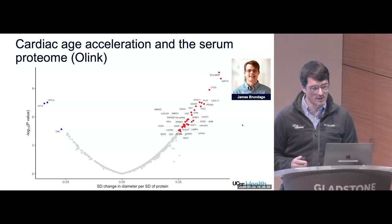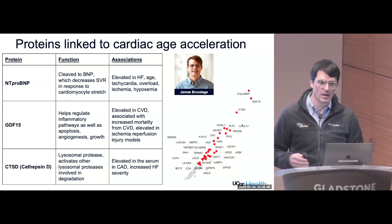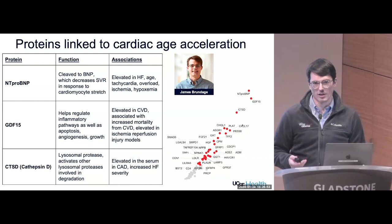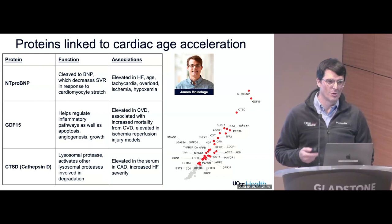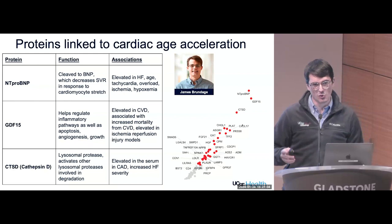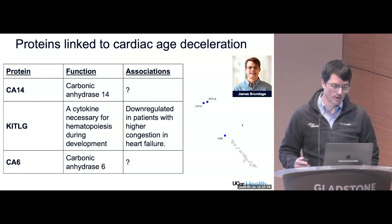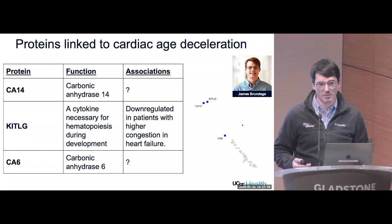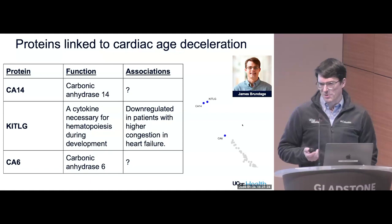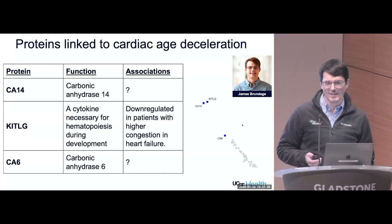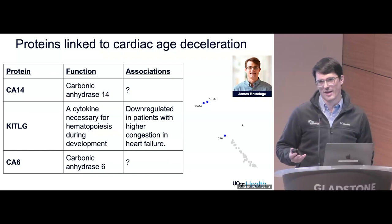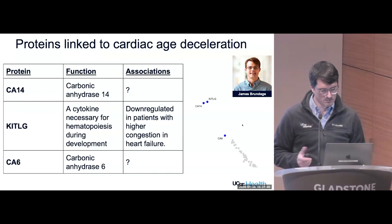We can also look at proteomics. Proteins with higher expression among those with accelerated cardiac aging include NT-proBNP, GDF-15, and Cathepsin D — previously associated with worsening heart failure or coronary disease. On the flip side, proteins lower in accelerated aging include CA-14 and CA-6 — carbonic anhydrases previously shown to be downregulated in heart failure, with some evidence for a role in lactate transport across the sarcolemma. Whether this reflects a functional role or simply cardiac damage, we can't yet say.